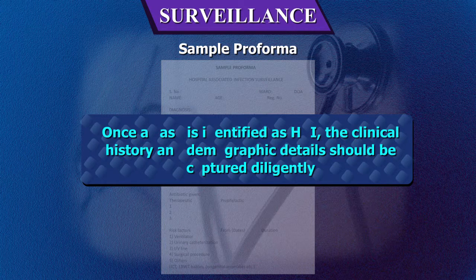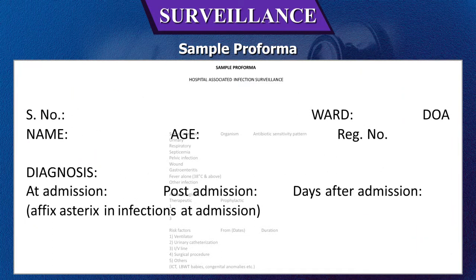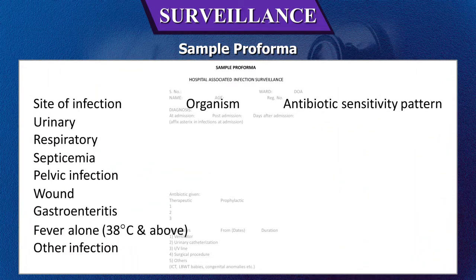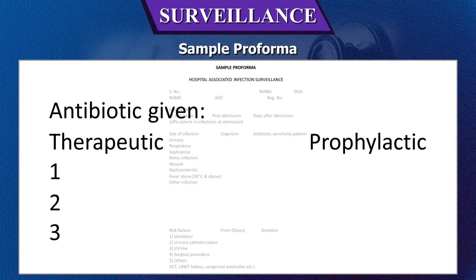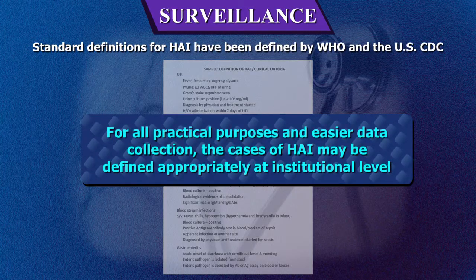This is an example of a sample pro forma for hospital-associated infection surveillance. It should include basic details such as serial number, date of admission, patient name, age, and registration number. The second part includes diagnosis at admission, post-admission days, site of infection, organism, antibiotic sensitivity pattern, antibiotic given (therapeutic or prophylactic), risk factors, dates, and duration of each.